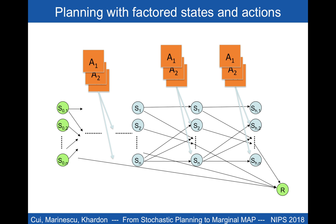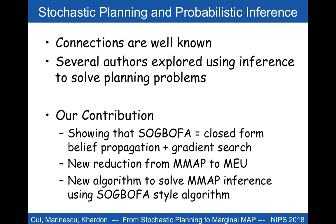The connection between planning and inference is illustrated in a figure showing a dynamic Bayesian network that captures the evolution of states over time from left to right. The goal is to find an assignment to actions — the orange nodes — that maximizes the expected cumulative reward represented by the R node on the bottom right. This and other ways to relate planning and inference are well known, and several authors have explored using inference to solve planning problems in the past.